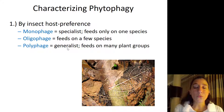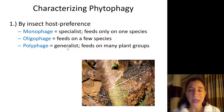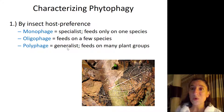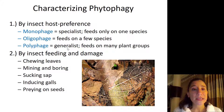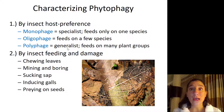We previously discussed during the predators and parasitism lecture some of the benefits and challenges of being a generalist versus a specialist, so you might recall those conversations. The second way to characterize phytophagous insects is by the type of strategy they use to feed and also where on the plant they are causing damage.